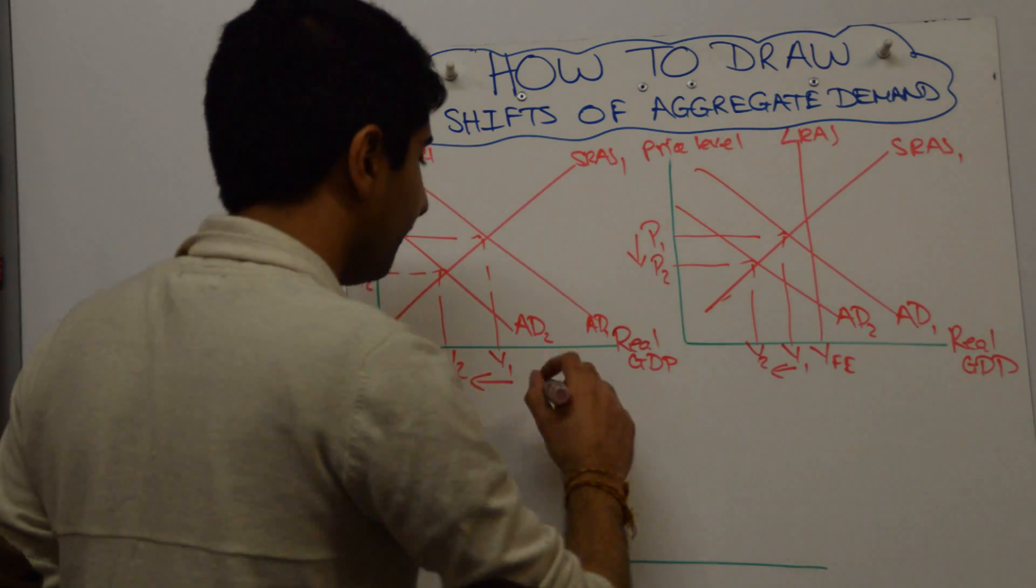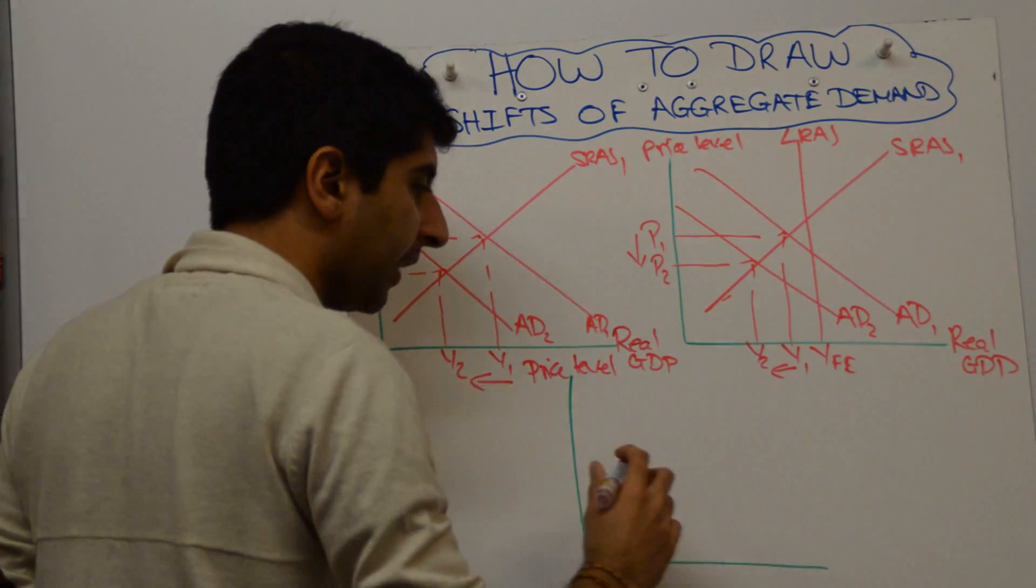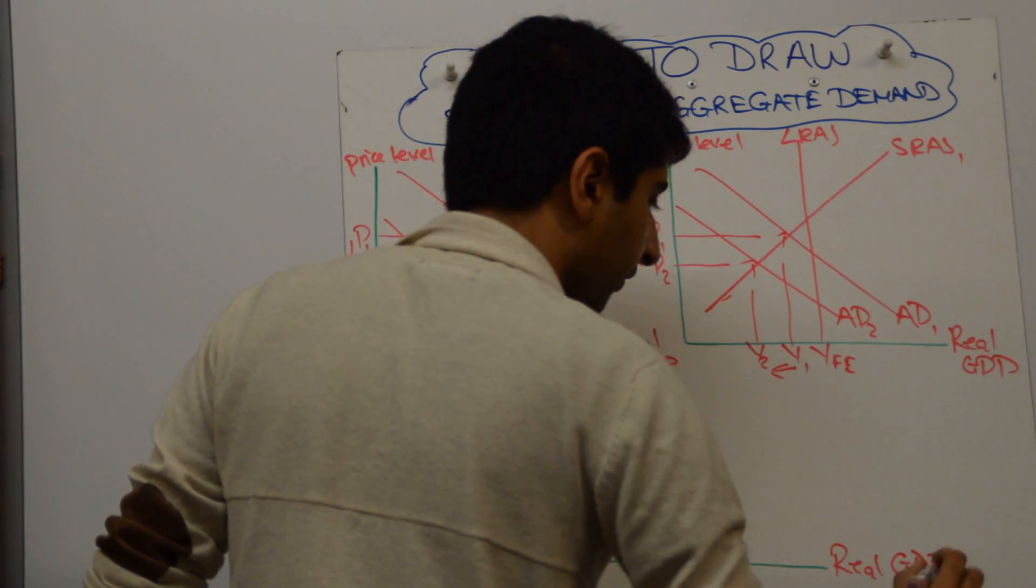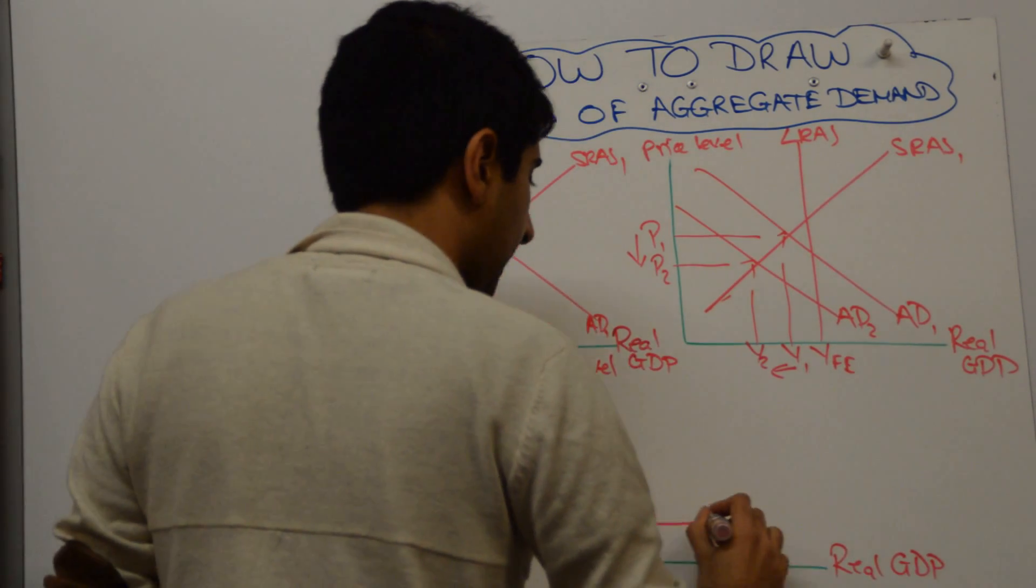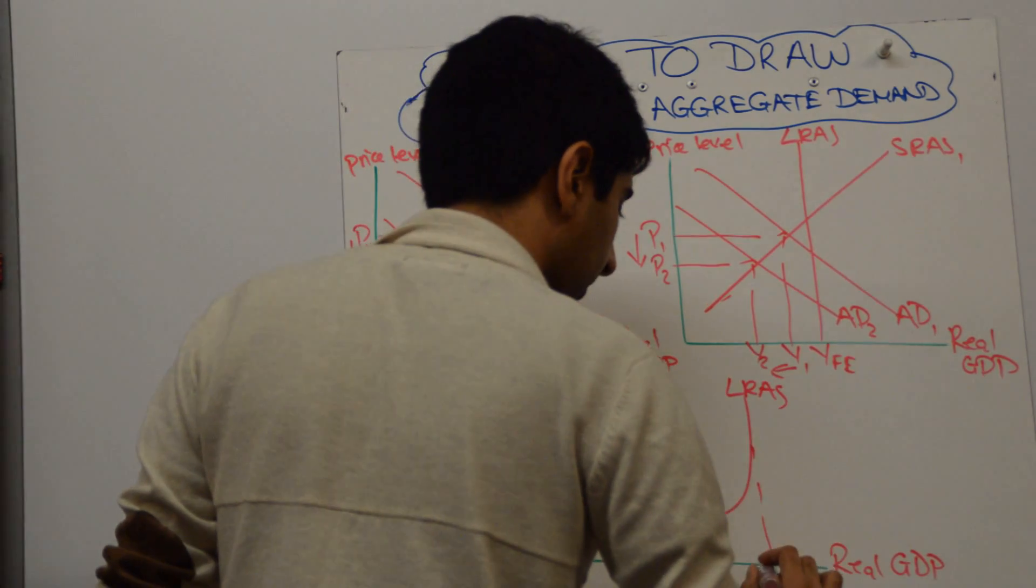You might want to use the Keynesian version. So what do we need to do there? We'll first label the axis, the price level on the Y axis, real GDP again on the X axis. Now draw your Keynesian LRAS looking something like that, with full employment there.